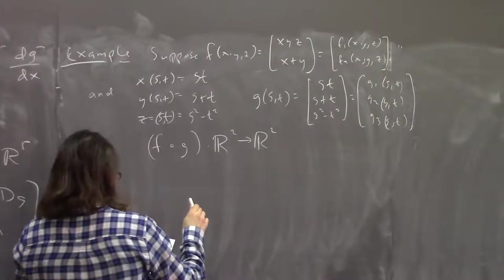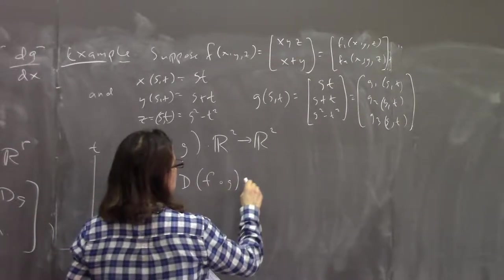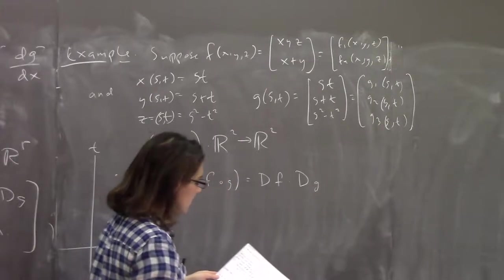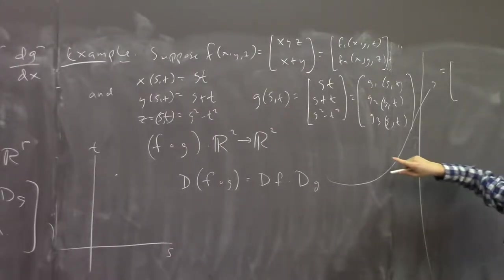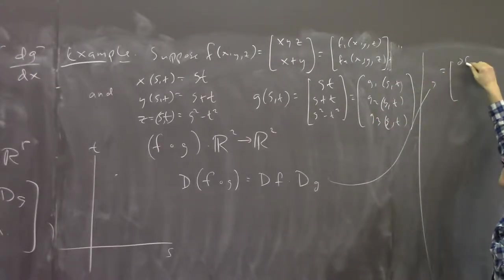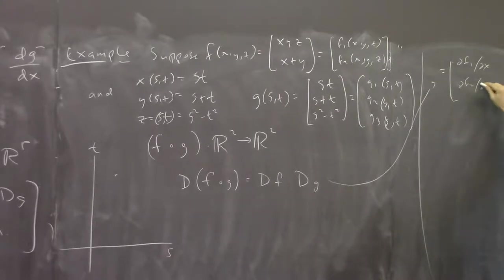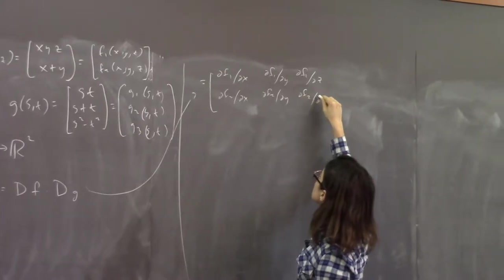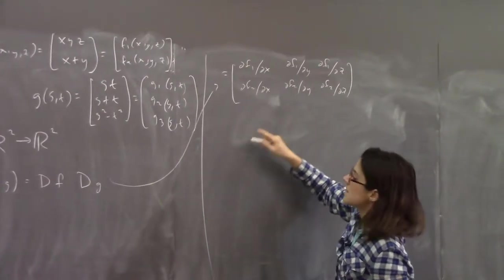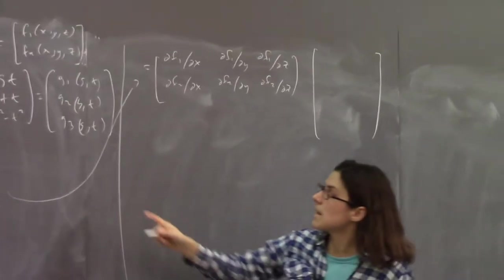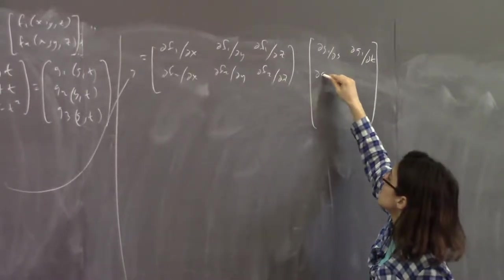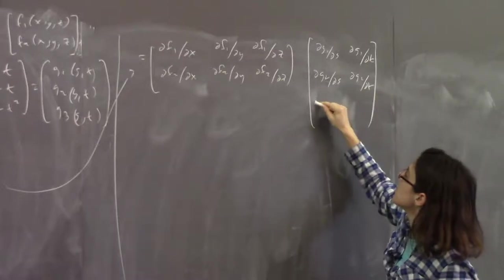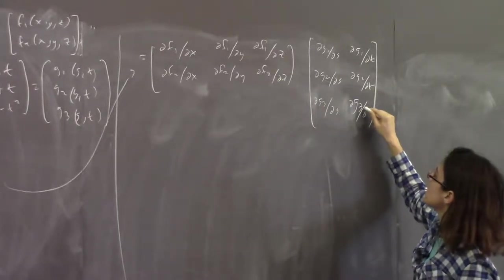To find the Jacobian of f∘g, we compute df times dg. For df, we need all partial derivatives: ∂f₁/∂x, ∂f₁/∂y, ∂f₁/∂z, and ∂f₂/∂x, ∂f₂/∂y, ∂f₂/∂z. For dg, we need: ∂g₁/∂s, ∂g₁/∂t, ∂g₂/∂s, ∂g₂/∂t, ∂g₃/∂s, and ∂g₃/∂t.